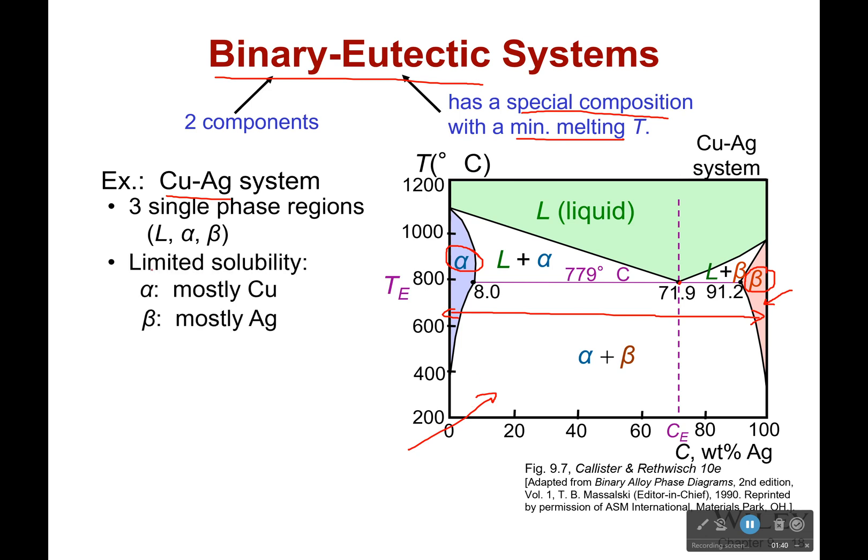And then right here we have that mixture of the two. So there is limited solubility in this case. Alpha is mostly copper, beta is mostly silver. This one right here is a mixture of the two.